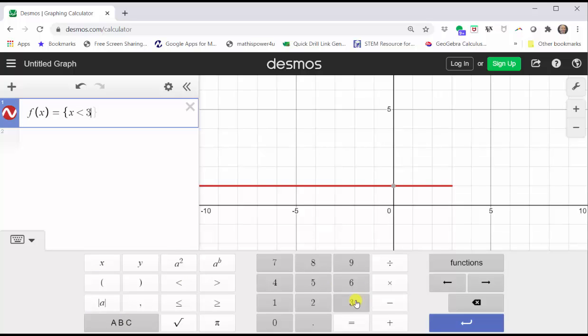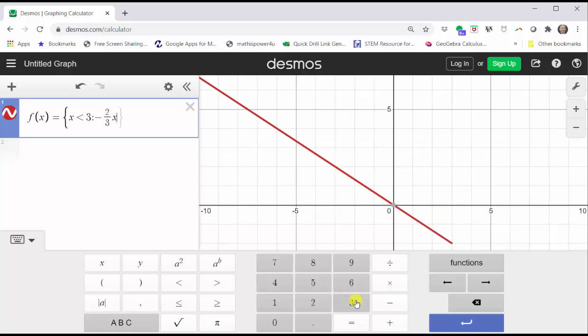And now we need a colon. I'm going to use the keyboard for the colon, and then we enter the corresponding function rule, which is negative 2/3x plus one. Enter negative two divided by three, tab or right arrow, x plus one.